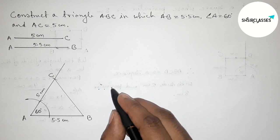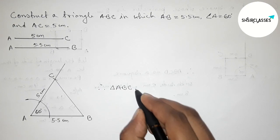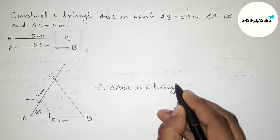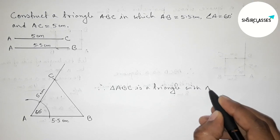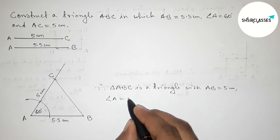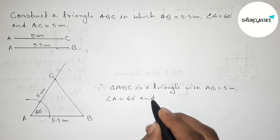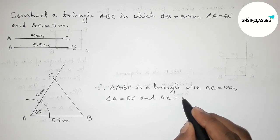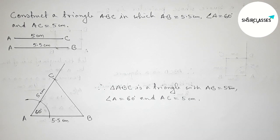Therefore, triangle ABC is constructed with AB equals 5.5 centimeter, angle A equals 60 degrees, and AC equals 5 centimeter. That's all. Thanks for watching — if this video was helpful, please share it with your friends.